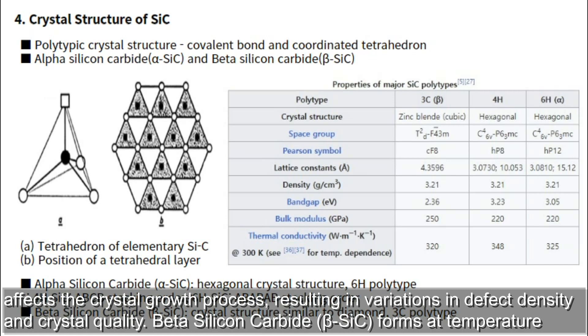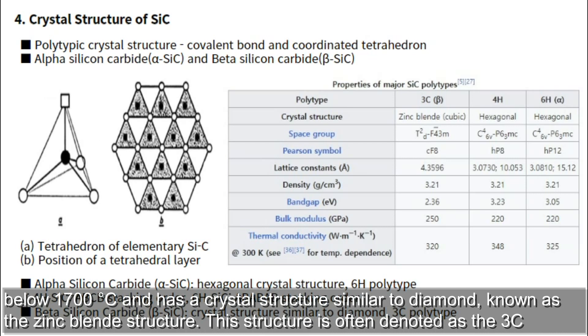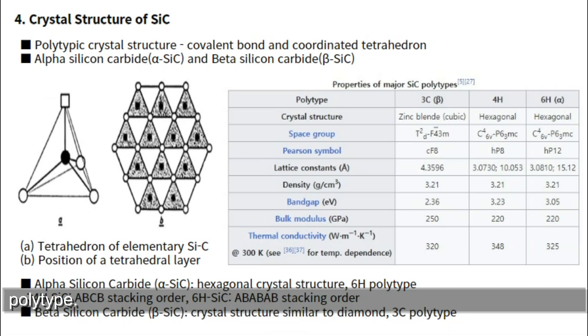Beta Silicon Carbide forms at temperatures below 1,700 degrees Celsius and has a crystal structure similar to diamond, known as the zinc blende structure. This structure is often denoted as the 3C polytype.